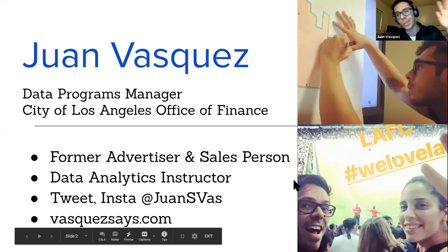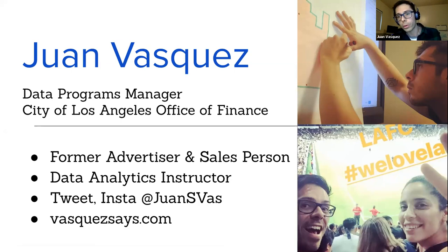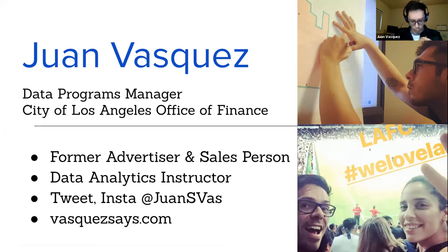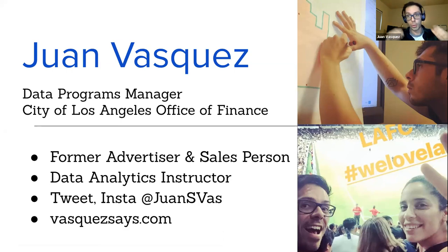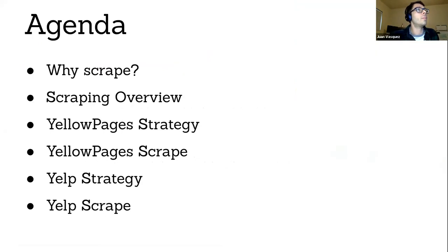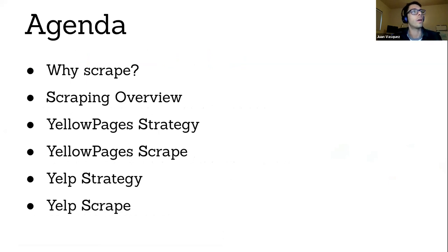You've already heard enough about me. I also teach at General Assembly and I'm on Twitter at @juanisvasquez. This is what we're going to talk about: why we should scrape, what scraping is, and then we're going to scrape Yelp and the Yellow Pages. Scraping is basically using technology and code to access data and content and bring it into an environment you can control.